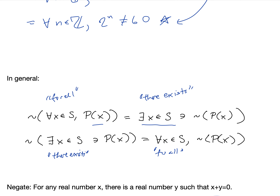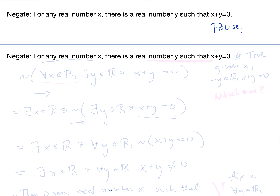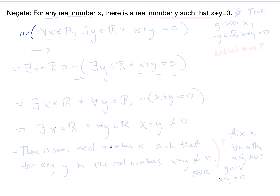With those rules in mind, here's another one to try. Negate: 'for any real number x, there is a real number y such that x + y = 0.' Pause and think about what the negation is. We can rewrite it using logical symbols as: for all x ∈ ℝ, there exists y ∈ ℝ such that x + y = 0.